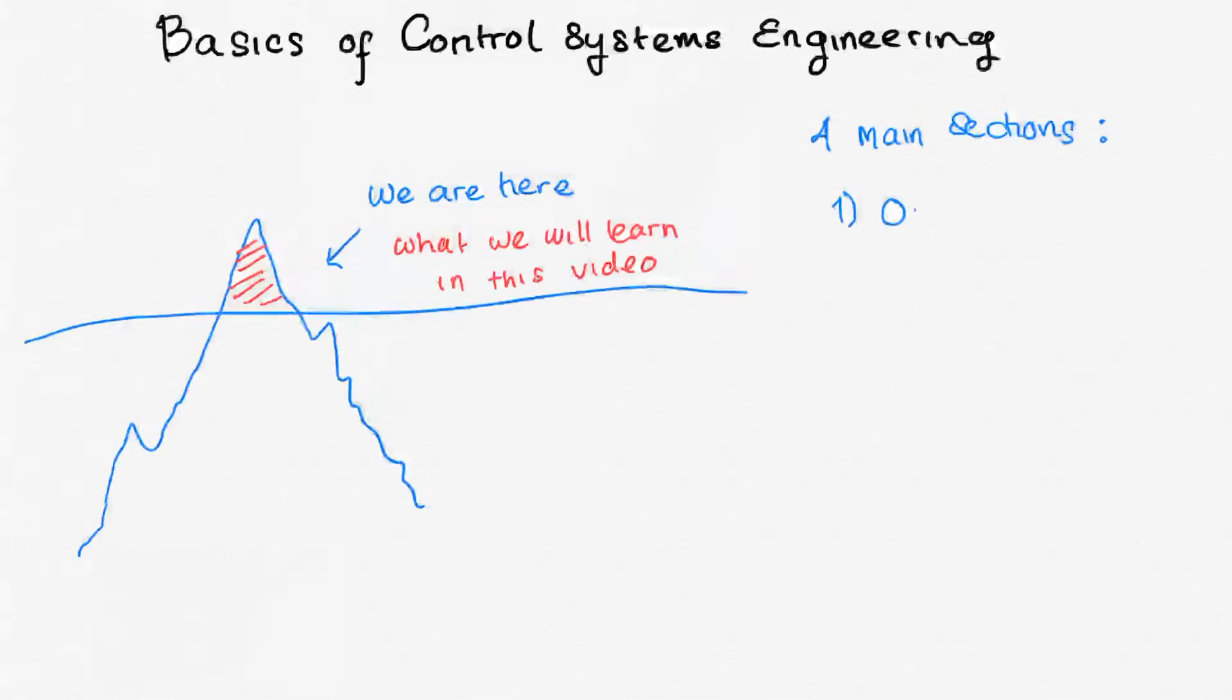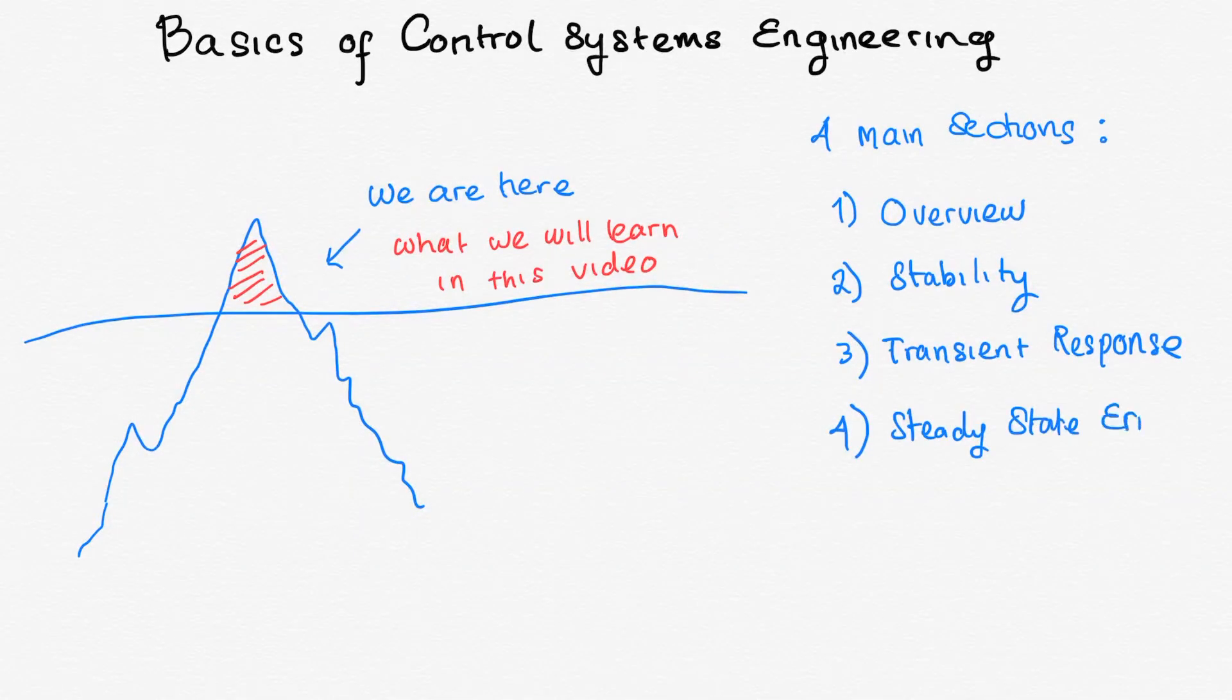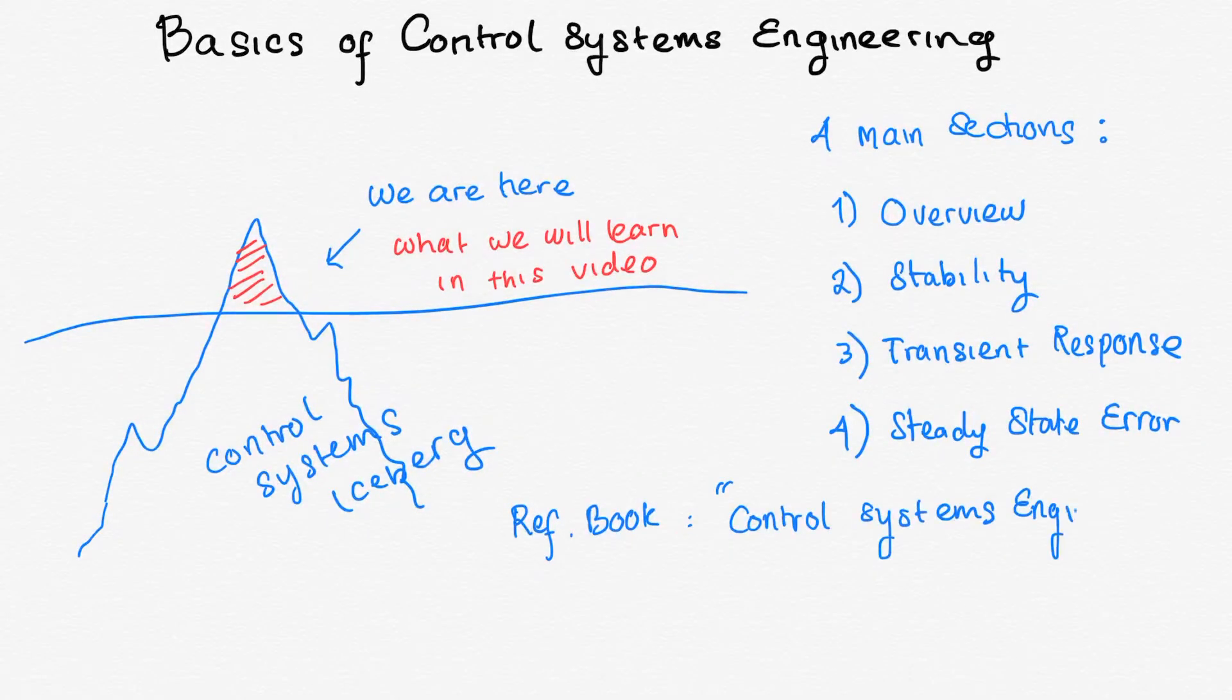The first one of the four is the overview of the control system. After that, we will move on to the analysis part. We will be interested in three things to be analyzed. First, the stability. Second, the transient response. And finally, the steady state error of the system. The book that we will use as reference is Norman Nise's Control Systems Engineering. We highly recommend you to read the book. Read the book, seriously.